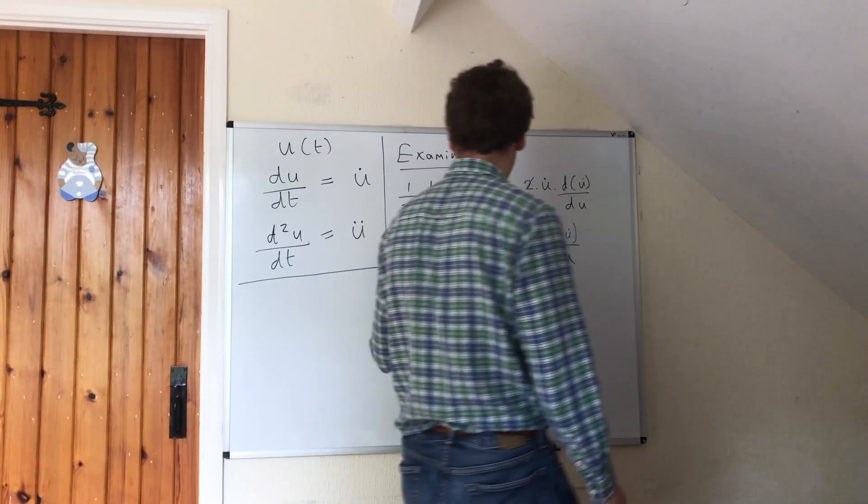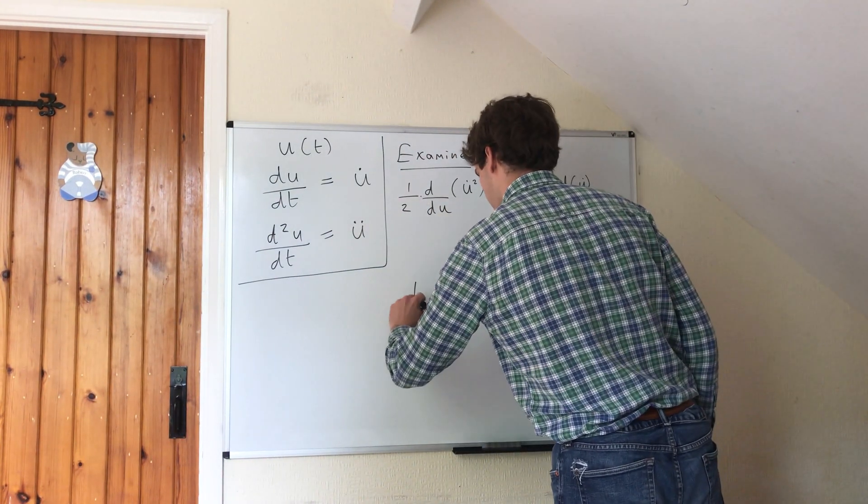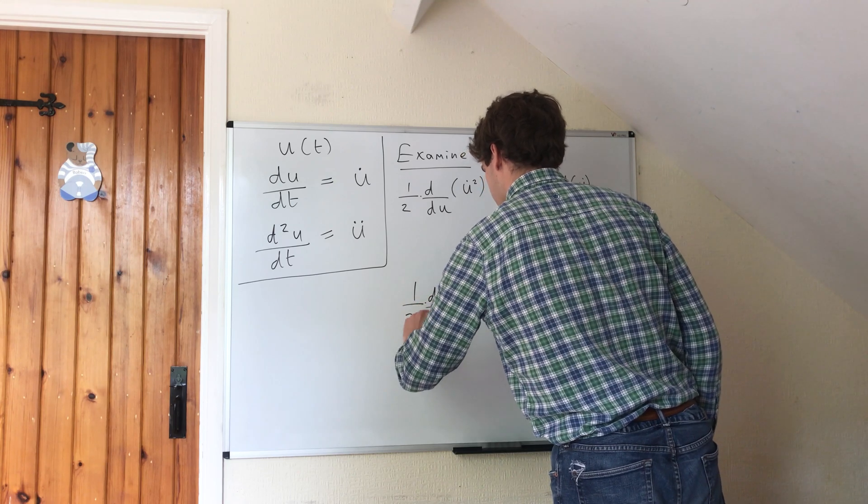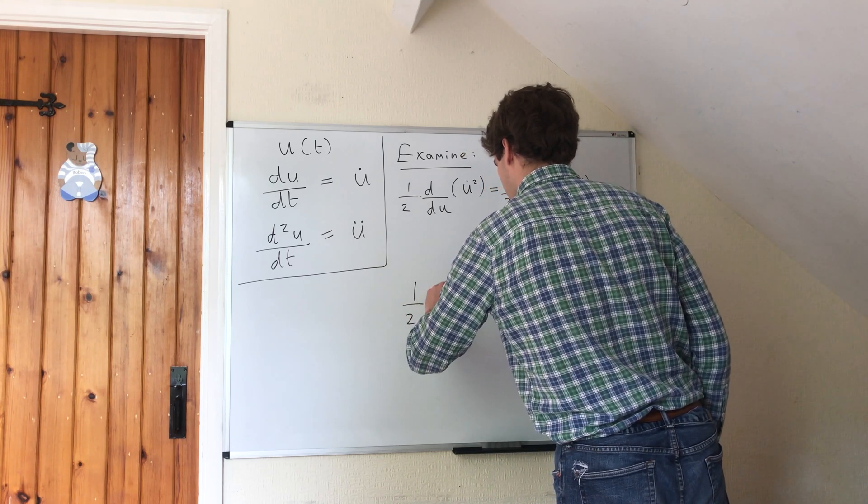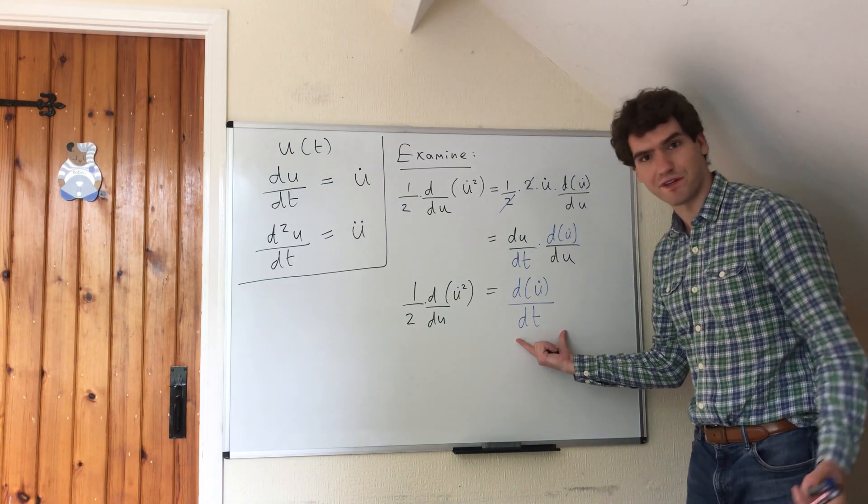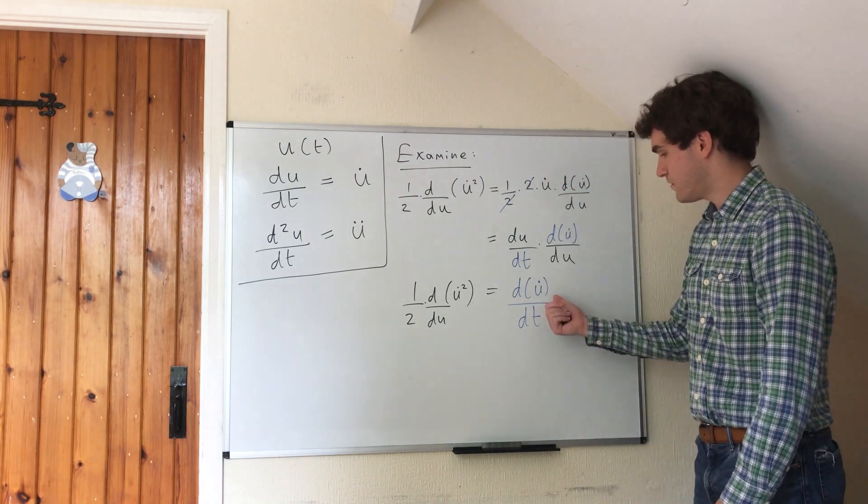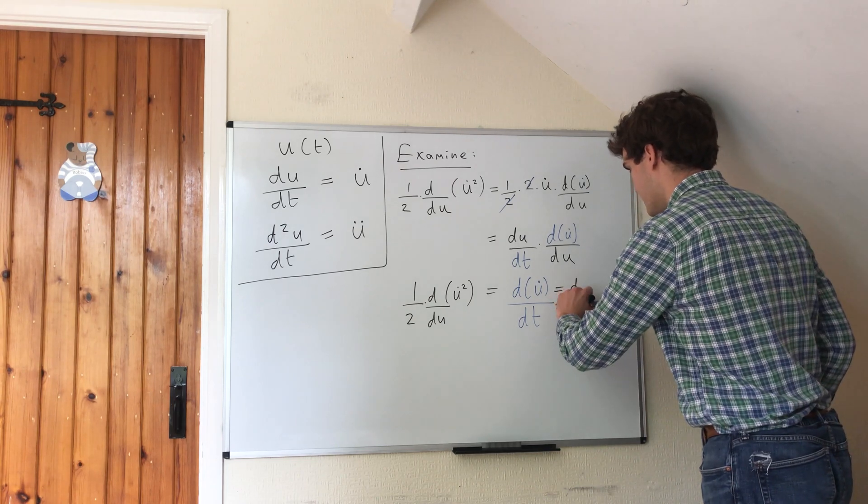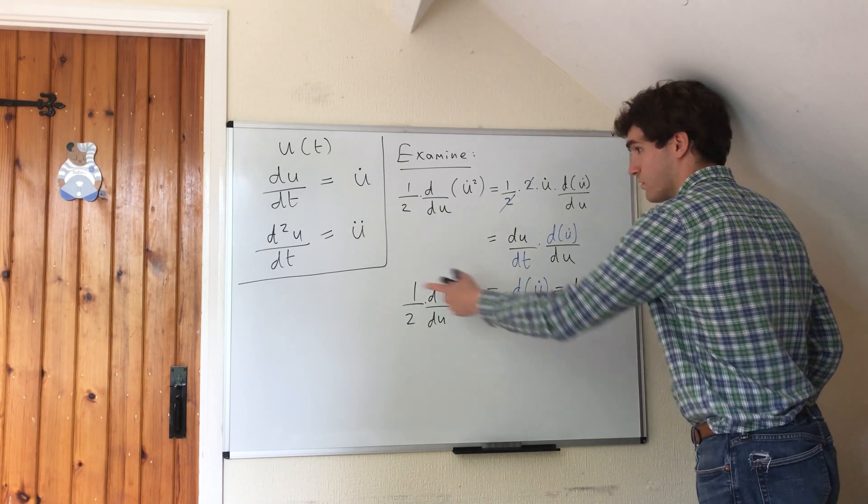So we've got this half d du of u dot squared is equal to this thing. What is this thing? Well, this is equal to d dt of u dot, which is du by dt.